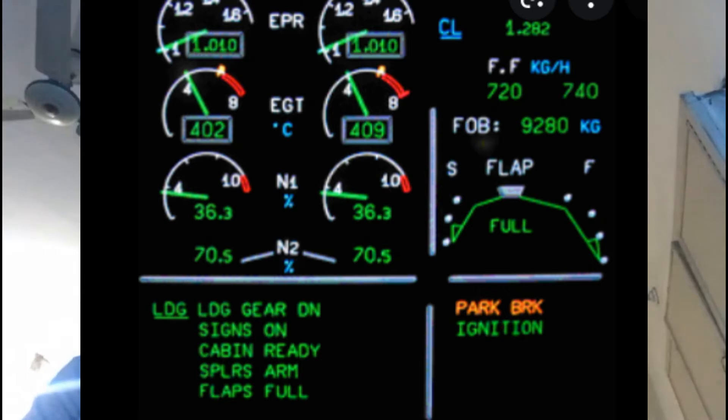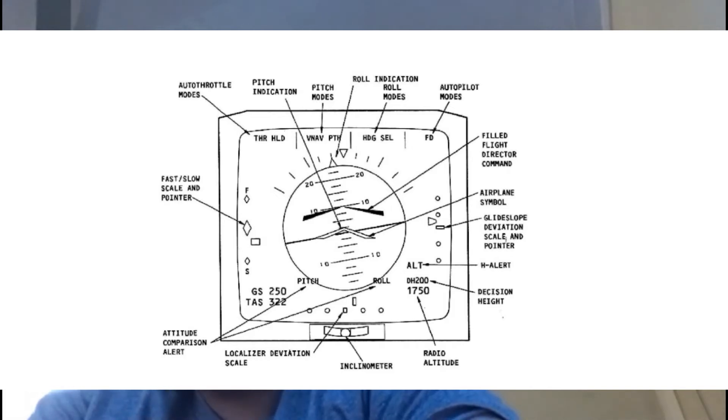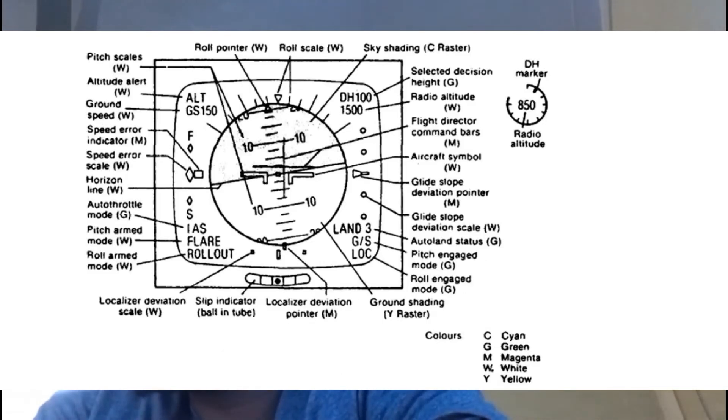Now we will discuss EFIS. Electronic Flight Instrument System is a flight deck instrument display system in which the technology used is electronic rather than electromechanical, as in the case of conventional flight instrument systems. A complete EFIS installation is made of a left captain and a right first officer system.